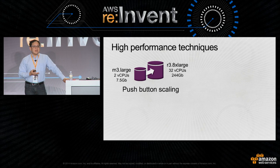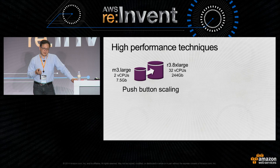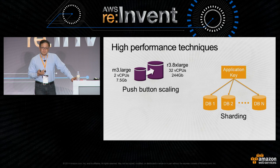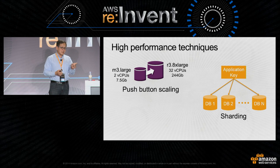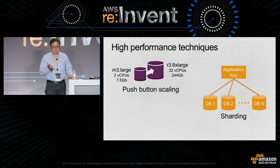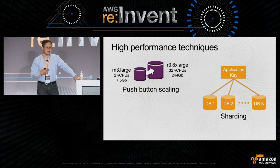With push-button scaling, you can scale vertically. For instance, if you start with a smaller instance, with the push of a button you can scale up to a much bigger instance, and RDS SQL Server will automatically provision that instance and reattach your data files. For sharding, it allows you to scale out horizontally — you can chop your database into smaller databases. For example, using a predefined key on customer ID, all customer IDs starting with one go into the first shard, and so forth.